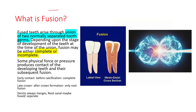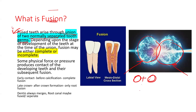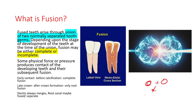Coming to fusion — when you think of fusion, it's always two things coming towards each other and joining together, like nuclear fusion in the sun. Fused teeth arise through the union of two normally separated tooth germs, and depending on the stage of development there may be complete or incomplete fusion. Two tooth buds come together giving rise to one tooth, due to some physical force or pressure.